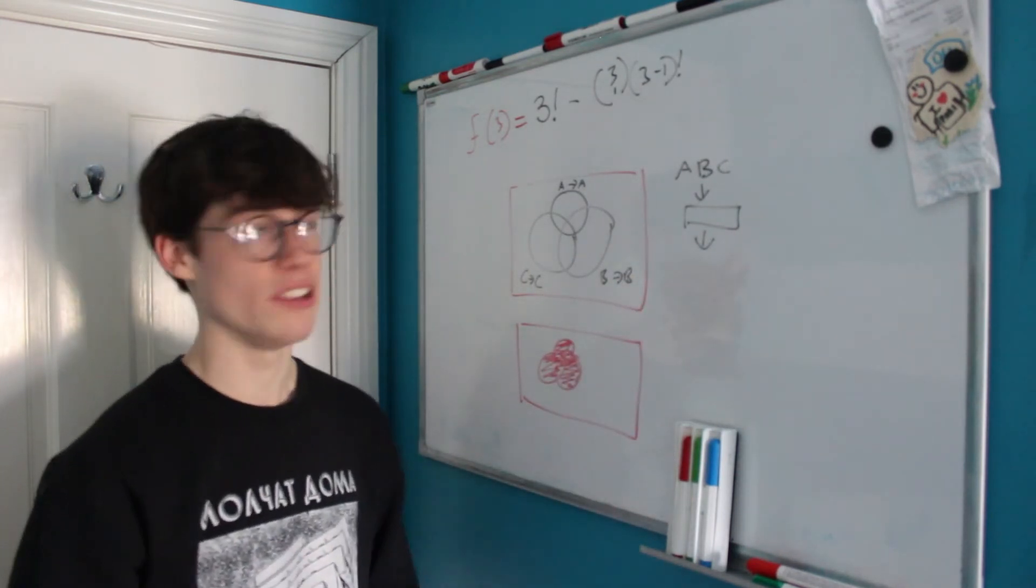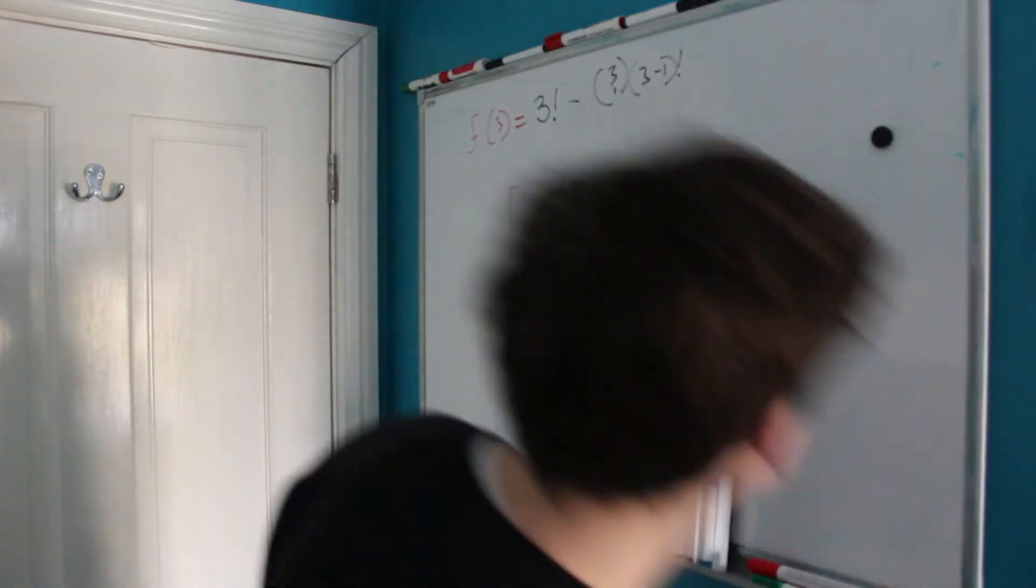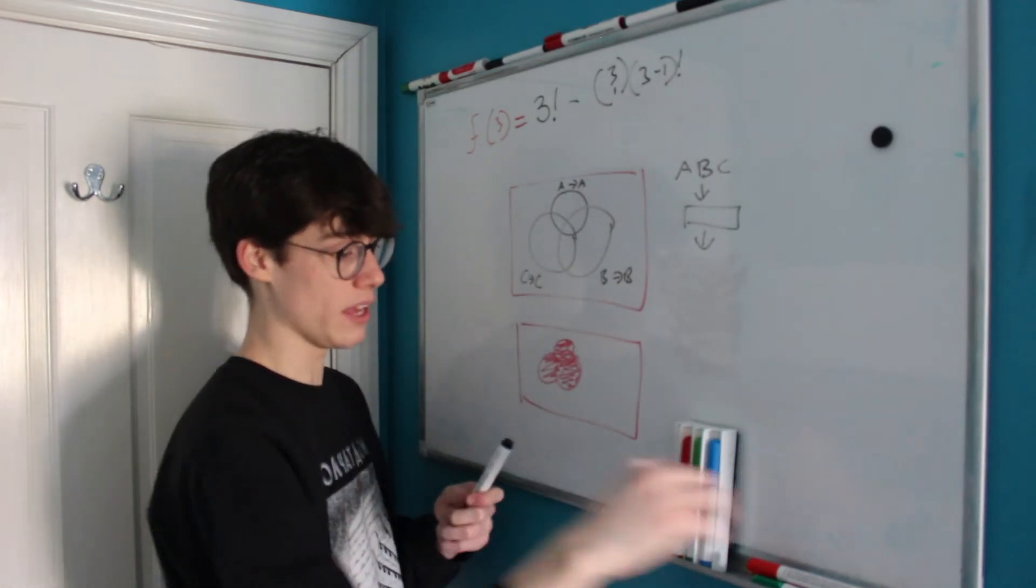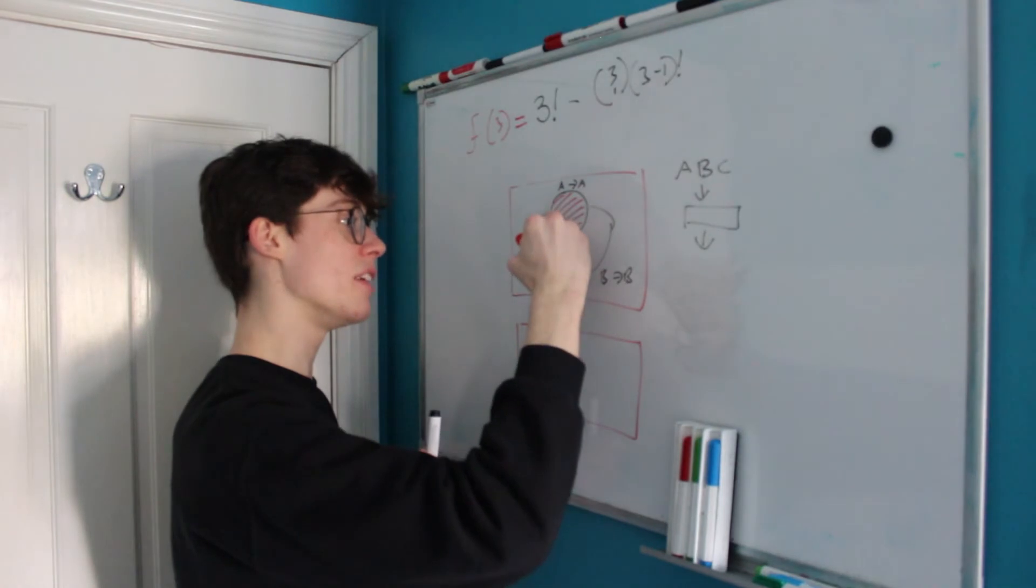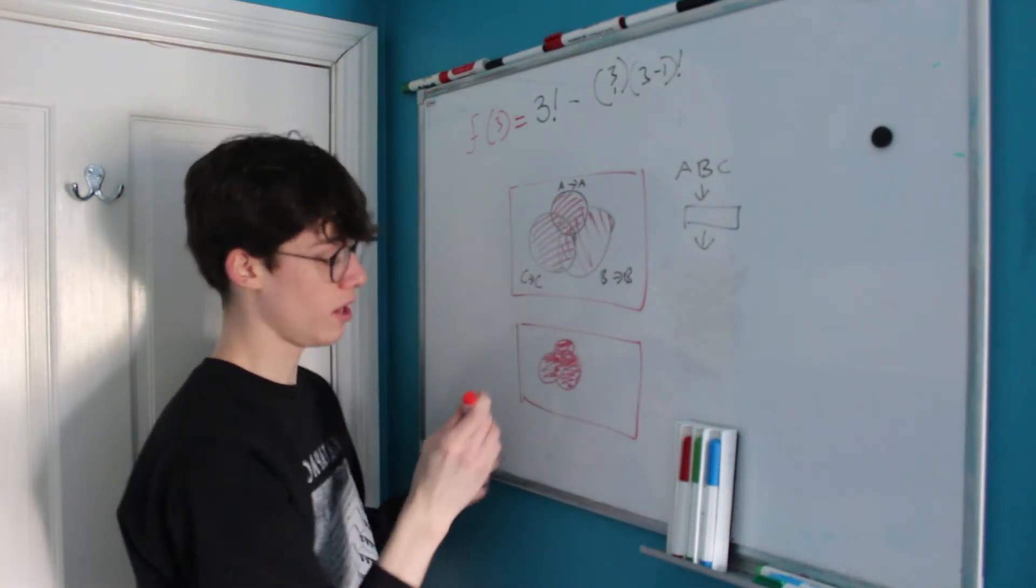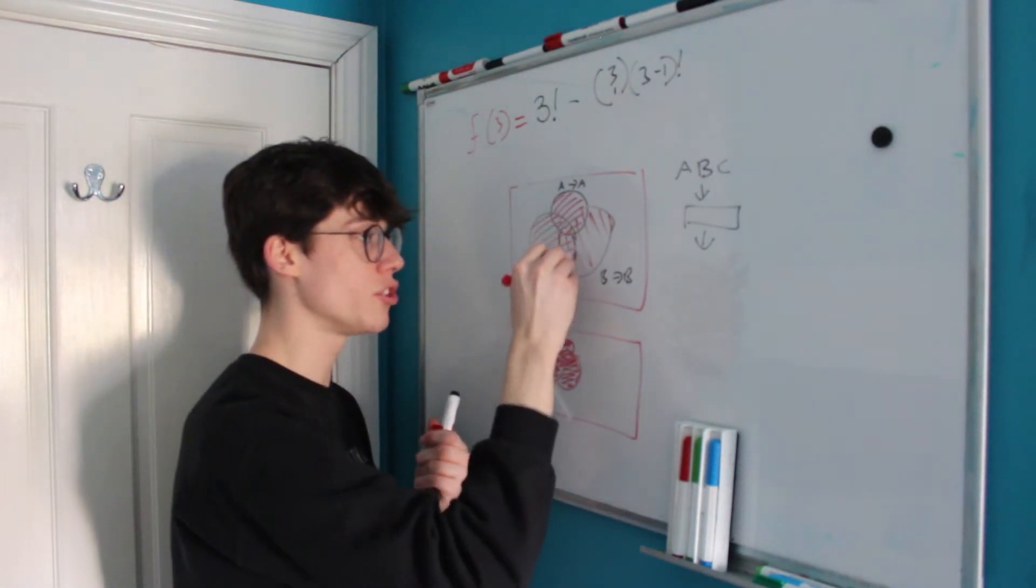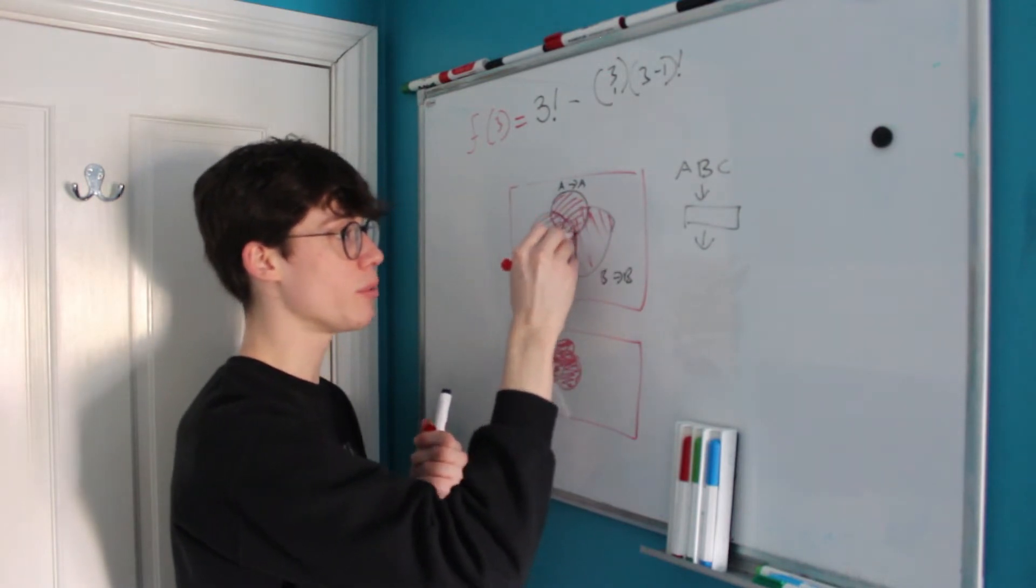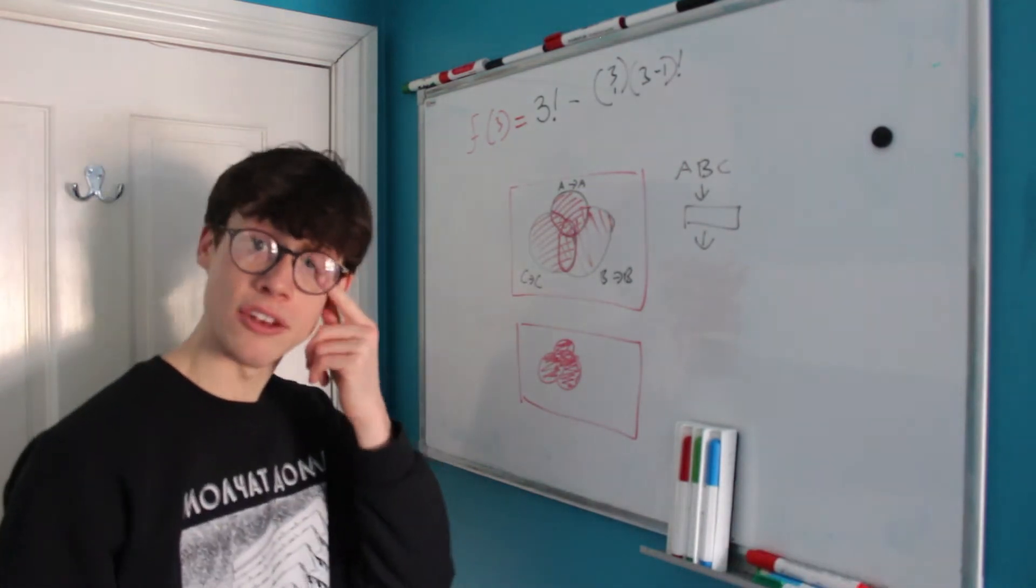Now the only issue with this is you might notice that actually we have subtracted too much because when we take away this circle and this circle and this circle we've subtracted each of the intersections much too much and we don't want that. We want to subtract everything only once so we're going to have to add some things back in to our sum.